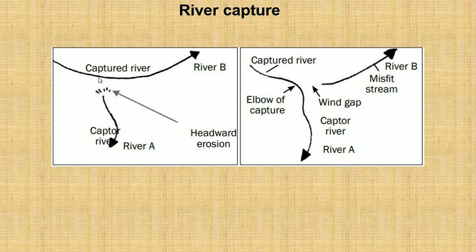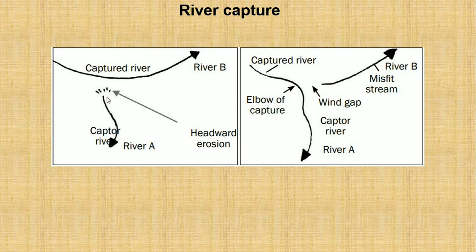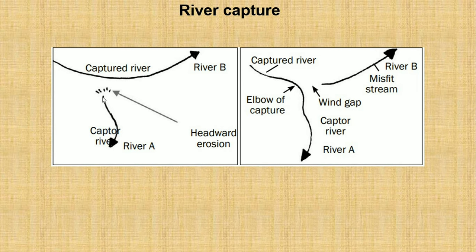As a result, the waters of River B will flow inside River A in the form of a waterfall, because River B is on higher ground whereas River A will be on a lower ground. As River A chips through and erodes the watershed, the waters of River B will flow inside River A.